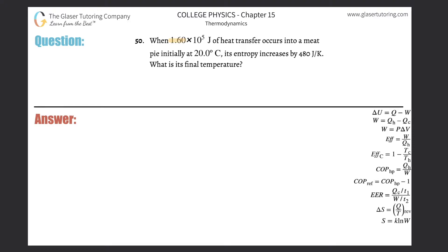Number 50. When 1.6 times 10 to the 5 joules of heat transfer occurs into a meat pie initially at 20 degrees Celsius, its entropy increases by 480 joules per Kelvin. What is its final temperature?